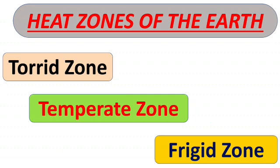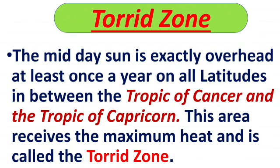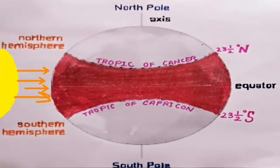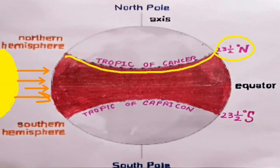First we will talk about the Torrid zone. The midday sun is exactly overhead — midday, that is noon time — at least once a year on all latitudes in between the Tropic of Cancer and the Tropic of Capricorn. This area receives the maximum heat and is called the Torrid zone. Now see in the picture — you will be more clear about the Torrid zone. The sun is exactly overhead at noon time. The Torrid zone lies between the Tropic of Cancer at 23.5 degrees north and the Tropic of Capricorn at 23.5 degrees south.